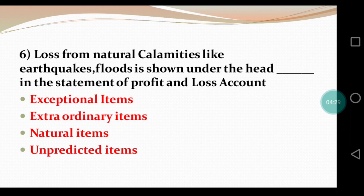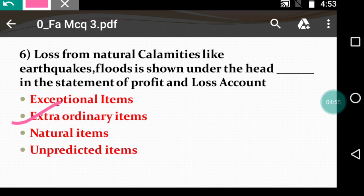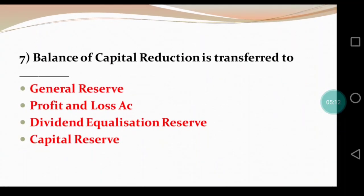Question 6: Loss from natural calamities like earthquakes and floods is shown under the head — dash — in the statement of profit and loss. The options are: exceptional items, extraordinary items, natural items, or unpredicted items. You might get confused between natural items and extraordinary items, but the right answer is extraordinary items, because these are items we do not record in profit and loss every time — only when a natural calamity occurs.